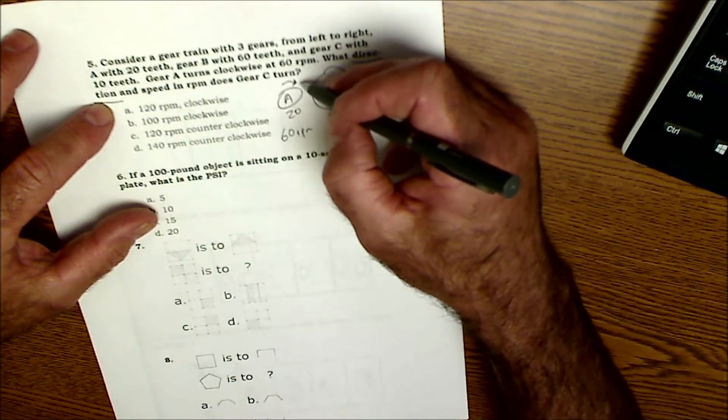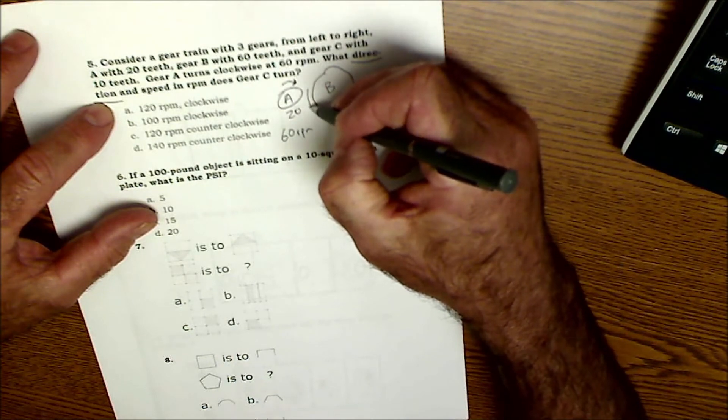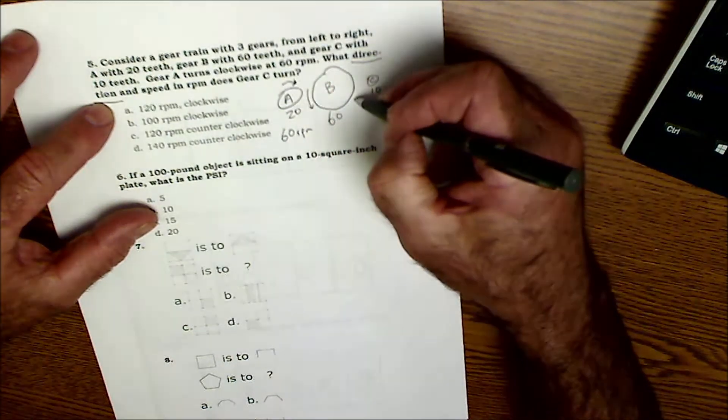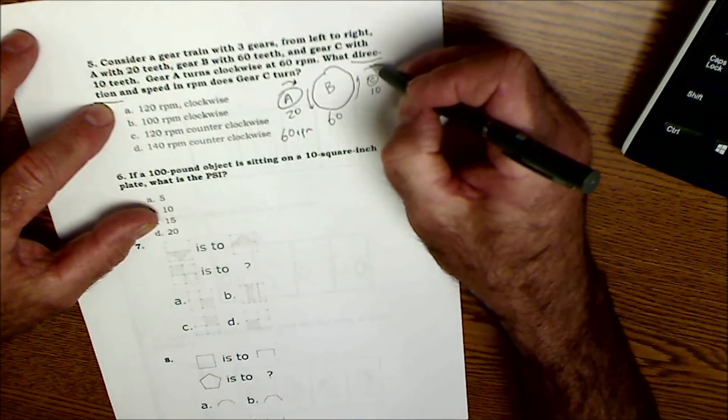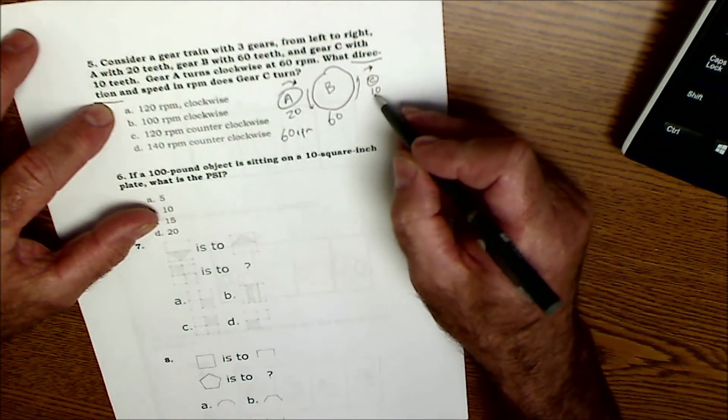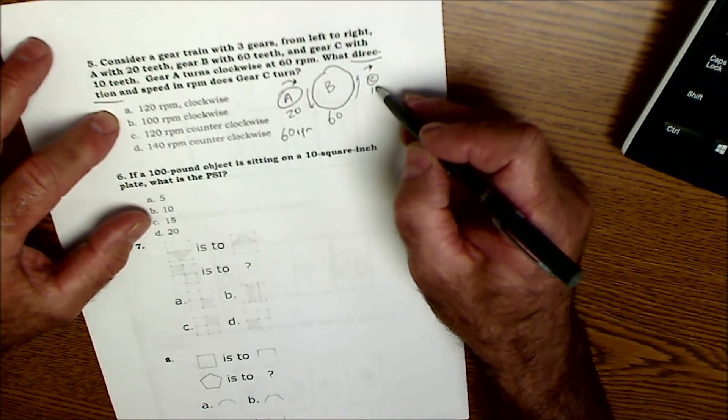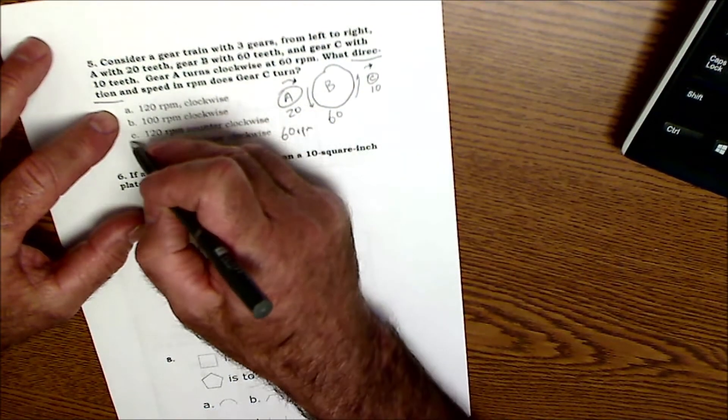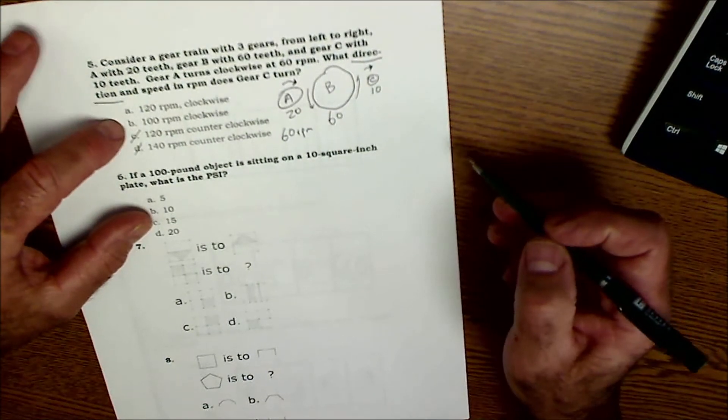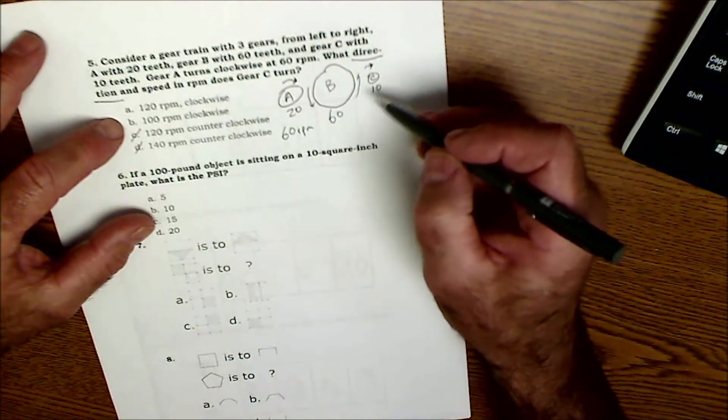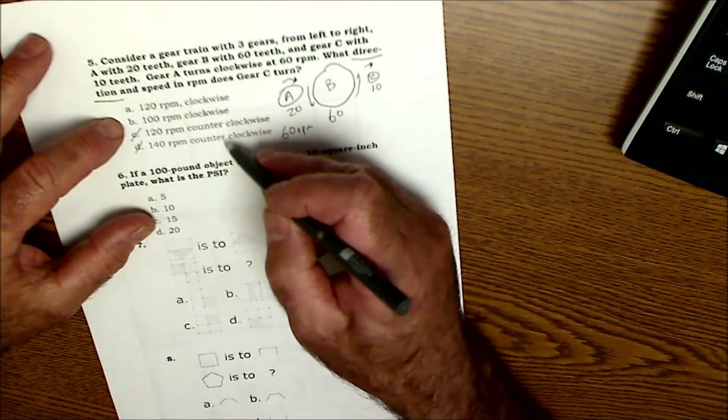What direction, I'm going to underline that because that's an important part, and speed and RPM does gear C turn? So let's figure the direction out. This is going to turn this way, meaning this thing's going to turn this way, right? And this thing's going to turn this way. So gear C is going to go clockwise. So even if I couldn't figure out the speed of it, I know it's going clockwise. So now my chances of getting it right are 1 in 2. But let's see if we can figure out the gearing, right? Because these are going counterclockwise.